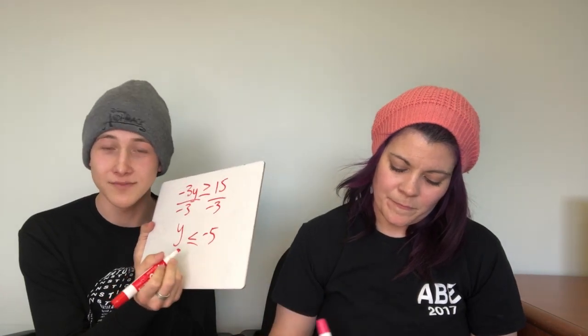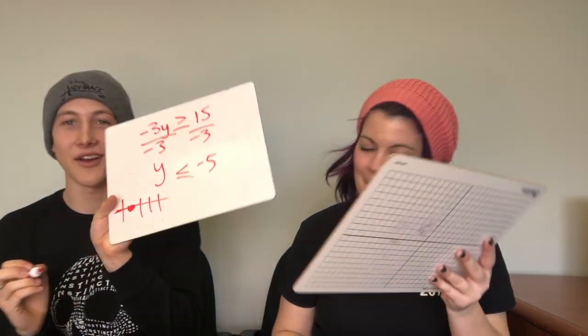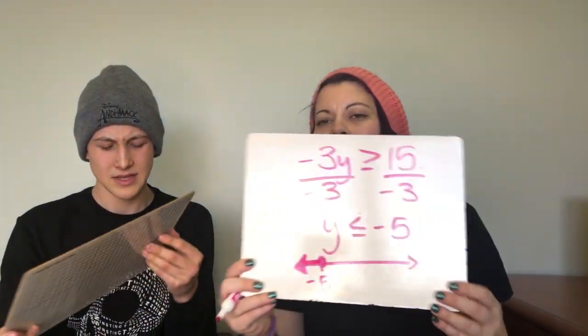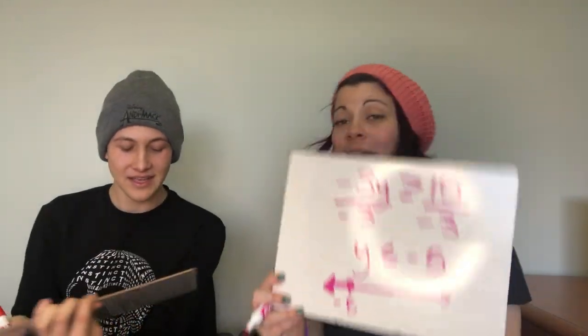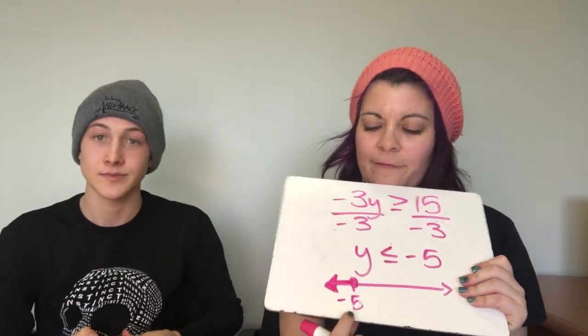Now let's graph it. The result is y is less than or equal to negative 5. Less than goes to the left — you can remember 'less equals left.' Since it's less than or equal to, it's a closed circle. So: closed circle at negative 5, shaded to the left.